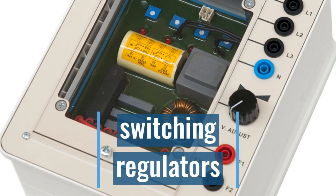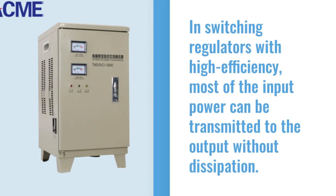Linear voltage regulators work with low efficiency while switching regulators work with high efficiency. In switching regulators with high efficiency, most of the input power can be transmitted to the output without dissipation.